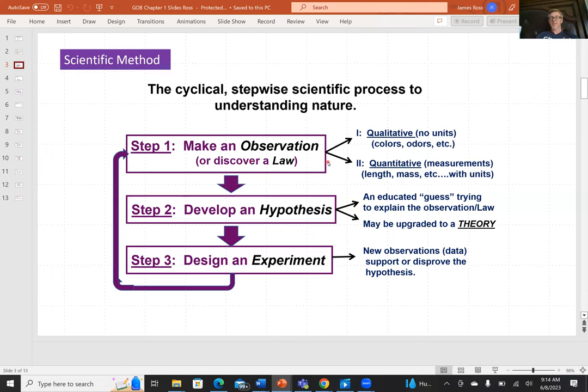We can make observations in two flavors. They can be qualitative, so the color of an object, the odor emitted by an object. Typically, qualitative observations have no units. And quantitative observations typically come with units. So the length of an object, the mass of an object, the density of an object.